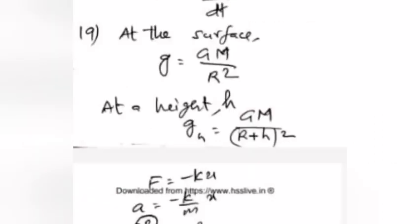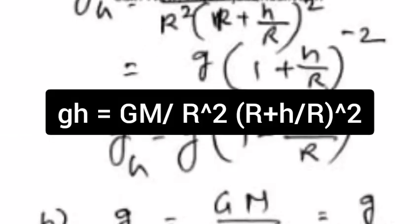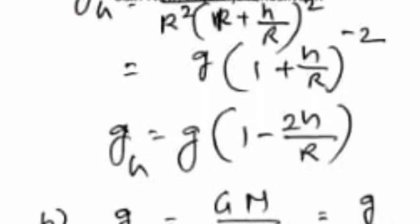Answer: At the surface, g equals GM by r squared. At height h, g h equals GM by (r plus h) squared, which equals g times (1 plus h by r) raised to minus 2.